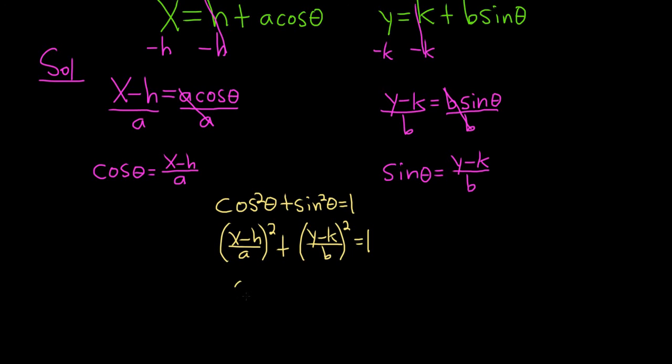We can square each piece now, so we'll have x minus h squared over a squared, plus y minus k squared over b squared, and that equals 1.